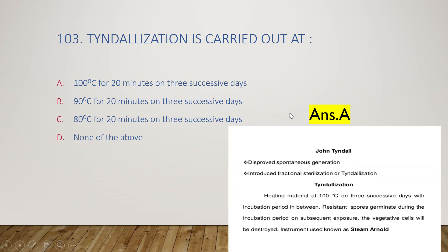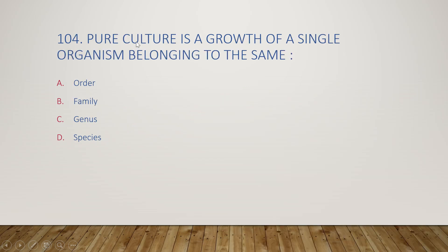The tindalization process was discovered by John Tyndall, who disproved spontaneous generation using this method. Also called fractional sterilization, it involves heating material at 100°C on three successive days with an incubation period in between. Resistant spores germinate during the incubation period, and the resulting vegetative cells are destroyed by the next heating. The instrument used is the steam Arnold.